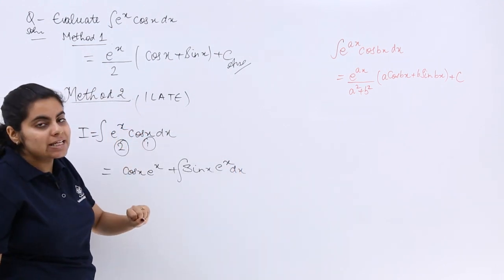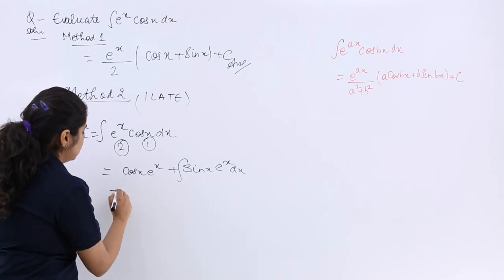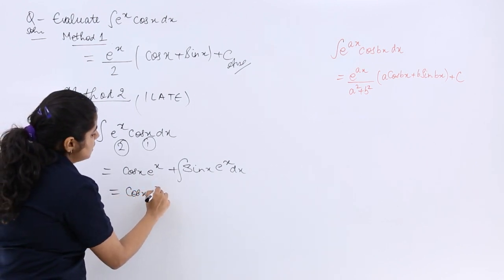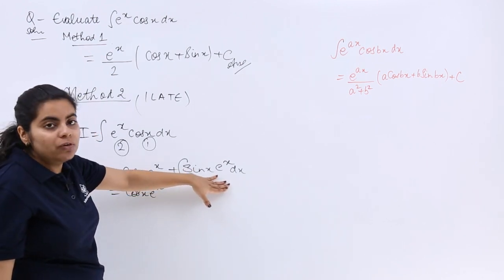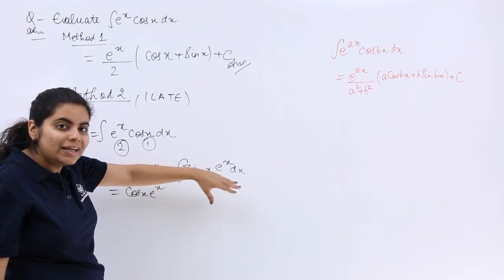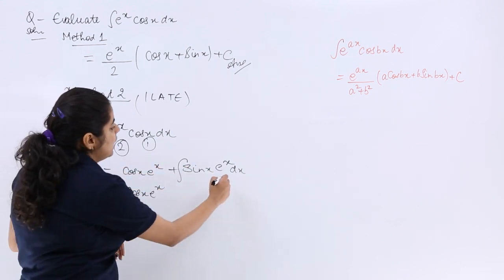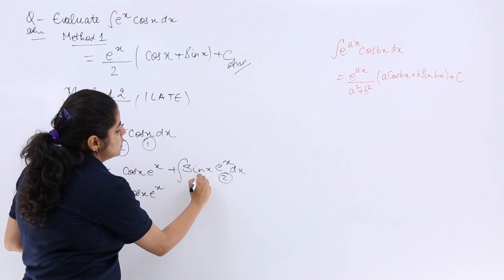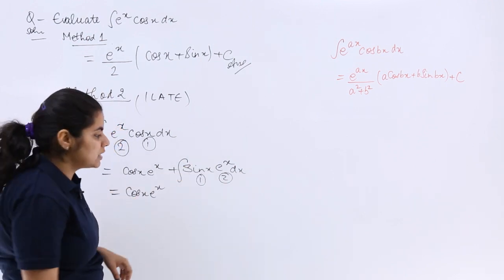Now e raised to the power x cos x was there as a question. Cos x e raised to the power x already there. Now we have to do what? Now again if this is your second function, this is your first function, then first function